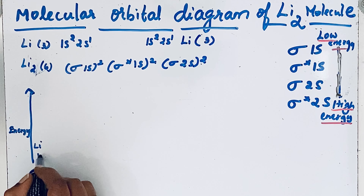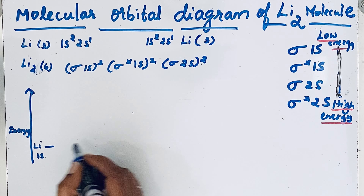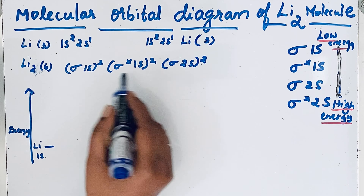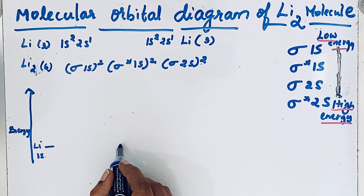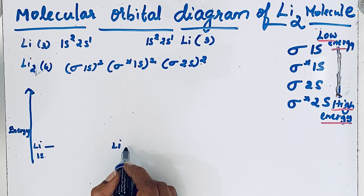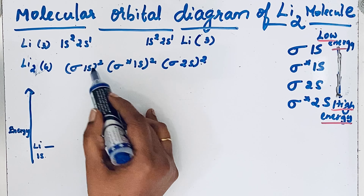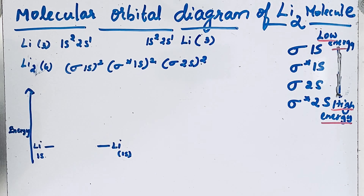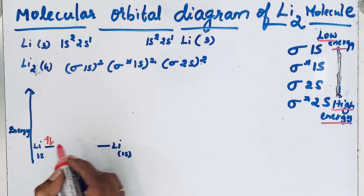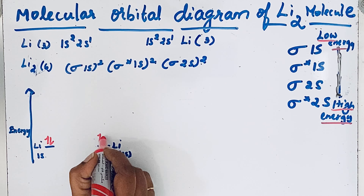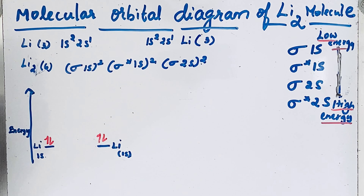For the first lithium atom, the 1s orbital has two electrons. In the same way, we draw for the other lithium atom also — the 1s orbital with two electrons. So we show two electrons for each lithium atom.